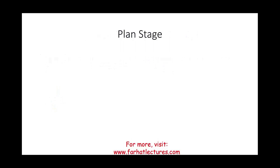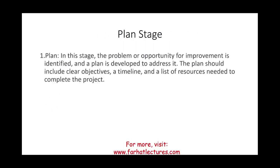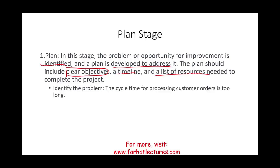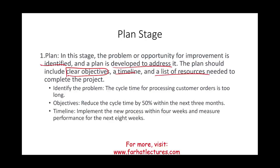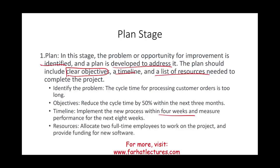Starting with the Plan stage: the problem or opportunity for improvement is identified, and a plan is developed to address it. This should include clear objectives, a timeline, and a list of resources needed. For example, if the cycle time for processing customer orders is too long, the objective might be to reduce cycle time by 50% in the next three months, implement the new process within four weeks, measure performance over the next eight weeks, and assign two full-time employees plus funding for new software.